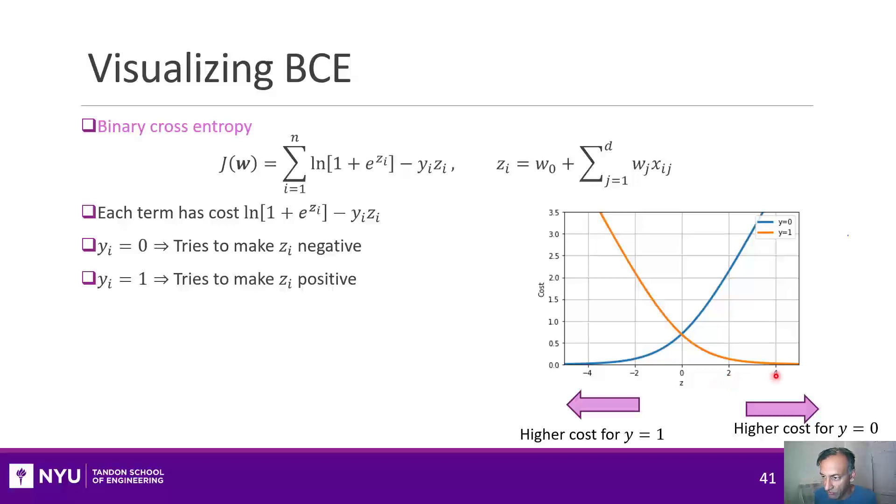Now that means when you're trying to minimize the function, it will try to make z less than 0. In fact, it will try to make it as negative as possible. On the other hand, if the sample is positive, that's yi is 1, the function looks like this orange curve. If you try to minimize that, it will try to make z as high as possible. So it's going to try to make z large on the positive samples and z to be a large negative value on the negative samples.